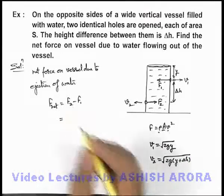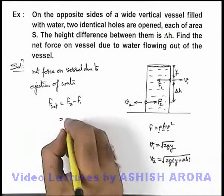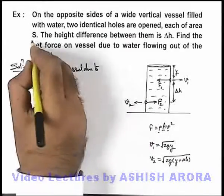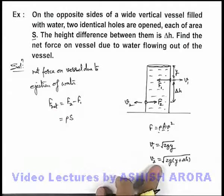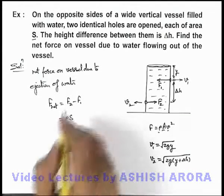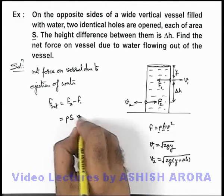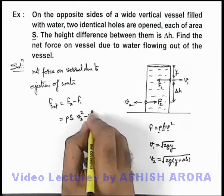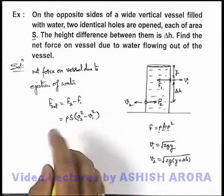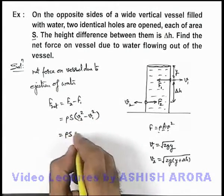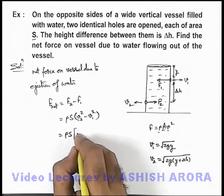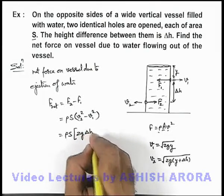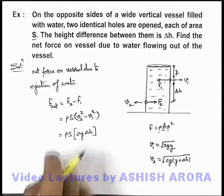So in this situation the value of f2 we can write as rho, and area of cross section we are given as S, so it is rho S. If we use v2 squared minus v1 squared and substitute the values, you can see the result will be 2g delta h as the term of y gets cancelled out in this.